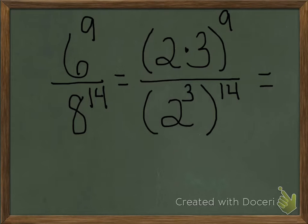We know that 2 to the 9th times 3 to the 9th is equivalent to the quantity 2 times 3 raised to the 9th power. We can also rewrite our denominator,